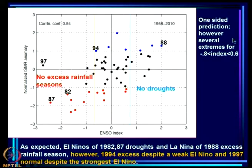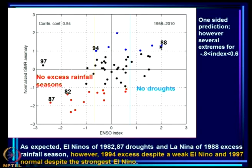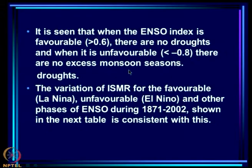Years 1982 and 1987 were famous El Niño years with droughts as expected; 1988 was a famous La Niña year and an excess rainfall year. But 1997 — the strongest El Niño of the century — produced near-normal monsoon, and 1994 — despite weak El Niño — produced an excess monsoon. These are intriguing features we will come back to, suggesting that ENSO alone does not explain everything.